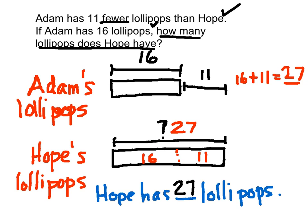Doing this type of model helps to really show that you understand the word problem for what it's asking you. It's also helpful because when you're reading and putting your answer back into the question, you can go to the labels to figure out exactly what you're talking about so you don't put the wrong number down. Sometimes you may put the wrong number down, but if you have this model, you'll be able to really take a look — Hope, what does she have? Lollipops. These are Hope's lollipops, therefore we're looking at the number 27.